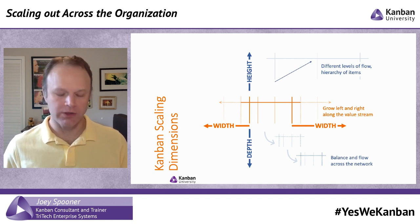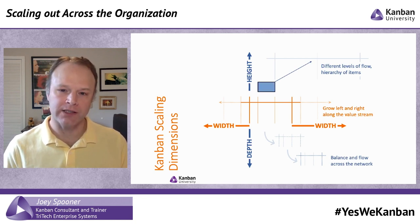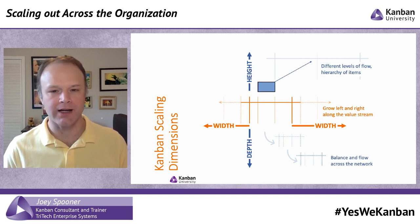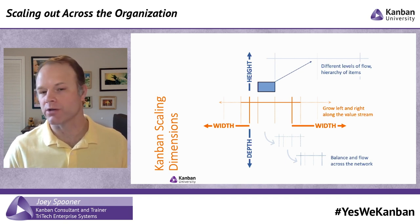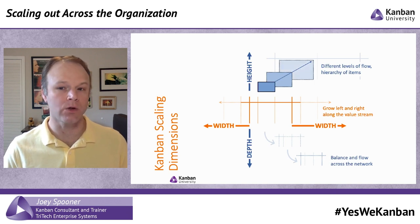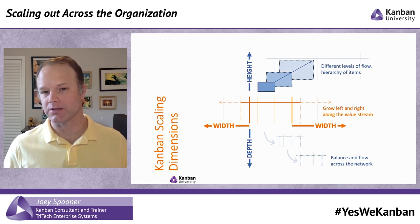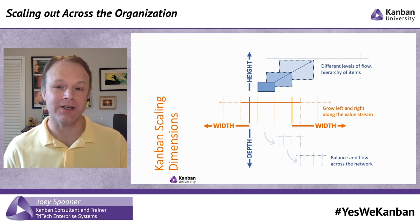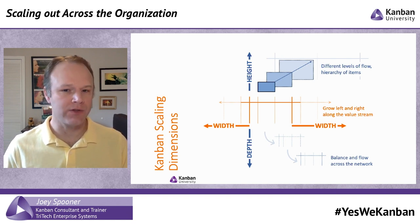On the flip side, you can go to higher levels of granularity. Imagine this being like the value stream ticket right here — a particular higher-level feature we're trying to get out the door for a customer. It's part of a larger subset of features that go to the customer. And ultimately, there's a strategic goal of reaching a particular segment of customers.